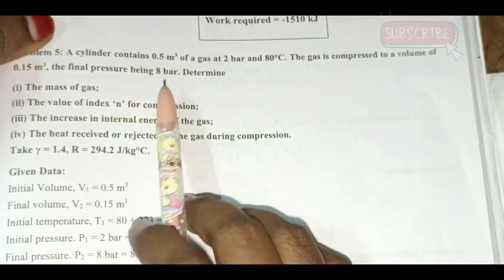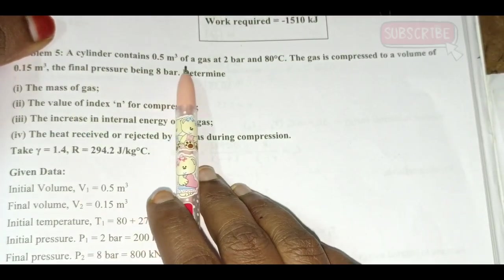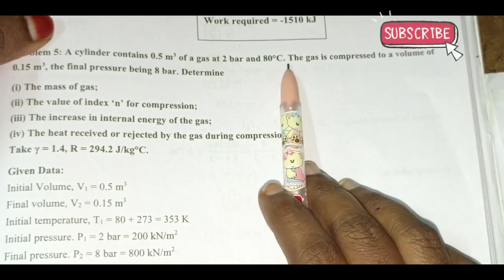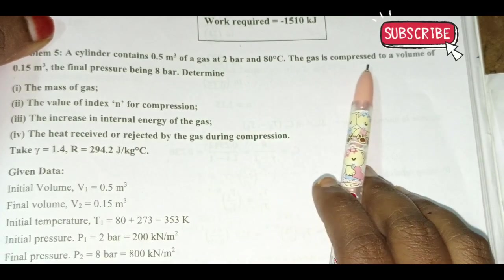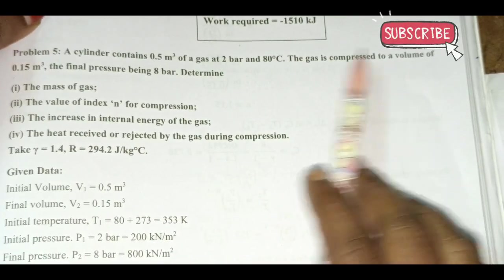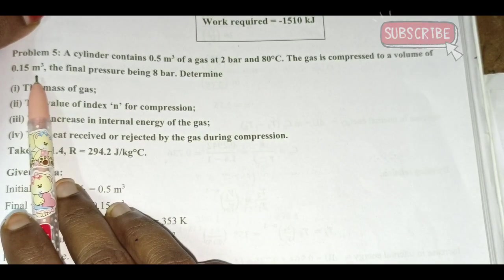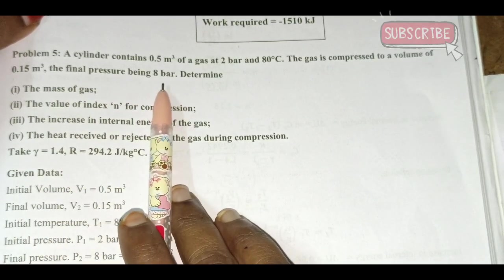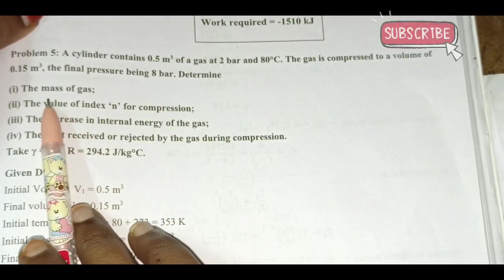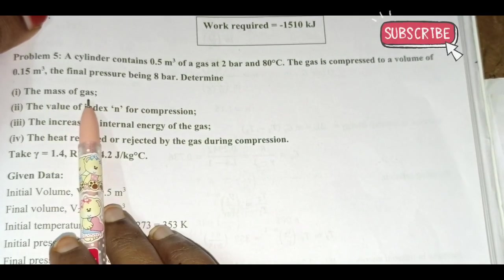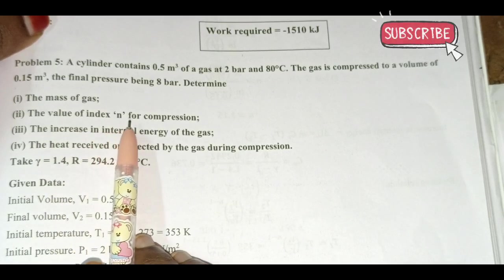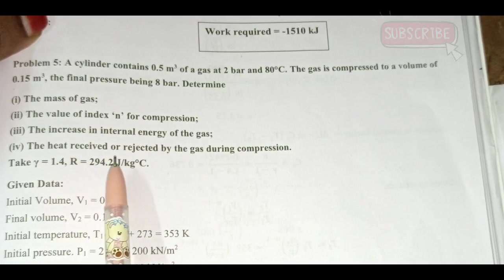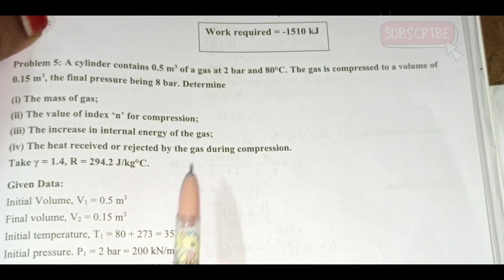The problem is that this cylinder contains 0.5 m³ of gas at 2 bar and 80 degrees centigrade. The gas is compressed to a volume of 0.15 m³. The final pressure is 8 bar. Determine the mass of gas and the value of index n.